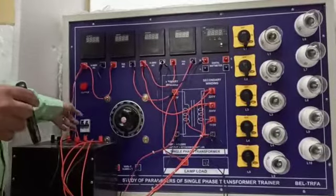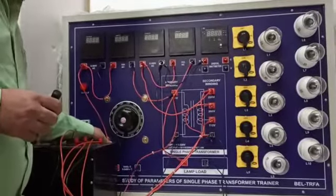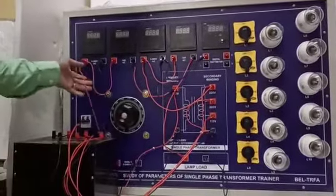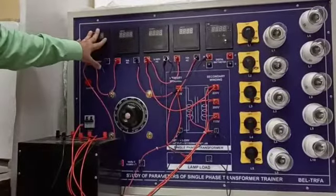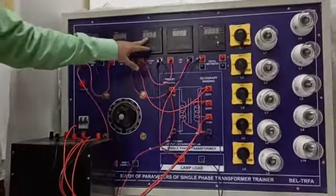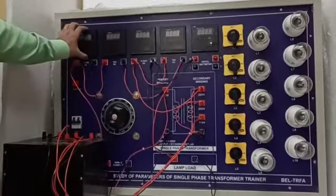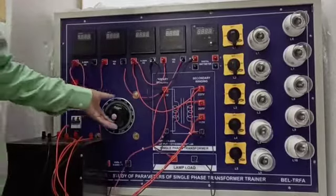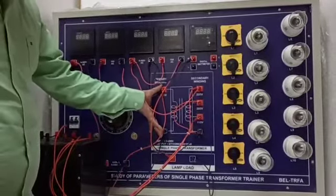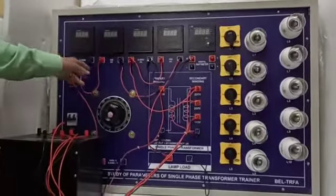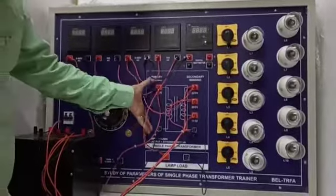So, what I have done is, this is my voltmeter, current meter, voltmeter, current meter and digital voltmeter. This is my primary voltmeter which will measure voltage at the primary of the transformer. This is my primary current meter which will measure the drop in the primary winding of the transformer.